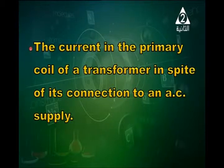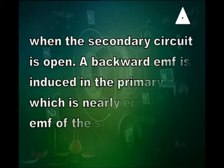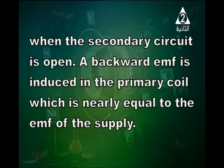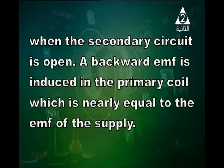When does the current in the primary coil of a transformer equal zero, even when connected to the mains? This happens when the secondary coil is unloaded — when the secondary circuit is open. No current passes through the secondary coil. In the primary, a back EMF is induced which is nearly equal to that of the supply, so no current passes in the primary either.